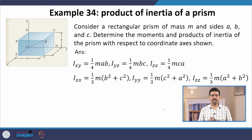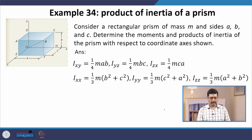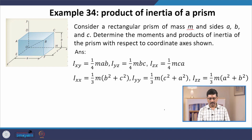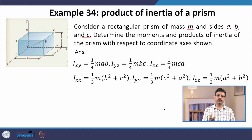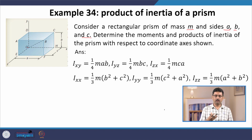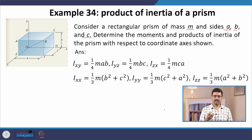To familiarize ourselves with this concept, let us work through an example. We take a rectangular prism with mass m and sides of length a, b, and c. One corner of the prism is our origin, and each side aligns with the x, y, z coordinate axes. In this particular choice of coordinate system, the mass distribution is on one side of the coordinate axes, so this is asymmetric, meaning we expect the product of inertia to be non-zero.